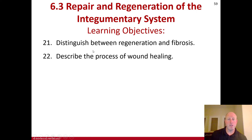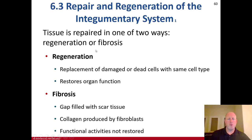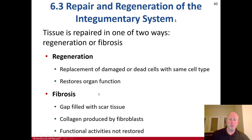And lastly, distinguish between regeneration and fibrosis, and describe the process of wound healing — now talking about Section 3 on repair and regeneration in the integumentary system. With tissue being repaired, it happens in one of two ways: regeneration or fibrosis. Regeneration replaces damaged or dead cells with the same cell type and restores organ function. Whereas fibrosis fills a gap with scar tissue — collagen is produced by fibroblasts — and functional activities are not restored, unlike regeneration where they are.